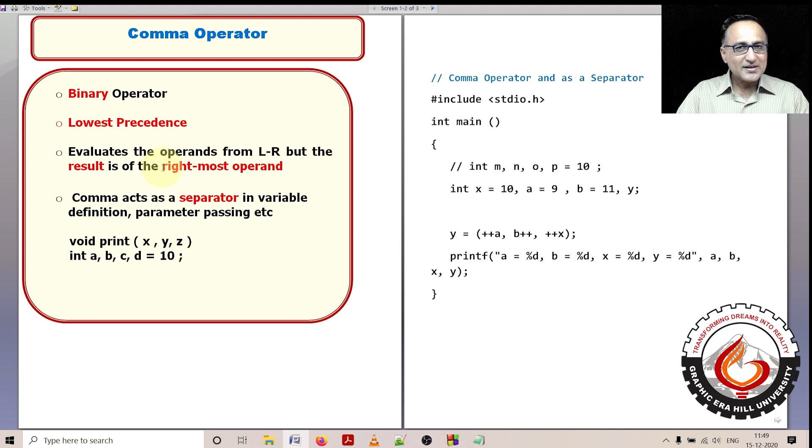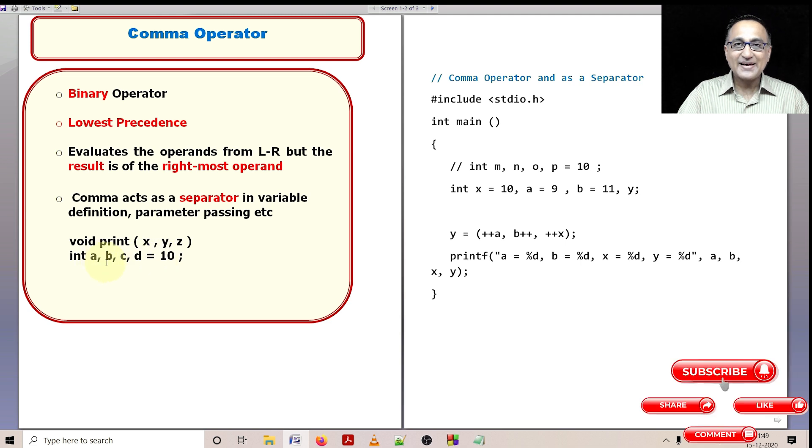Now you need to understand there is a difference between the comma as operator and comma as a separator. For example, if I declare an integer variable a comma b comma c comma d is assigned the value 10, here comma is acting as a separator. Similarly, if I call the function print and I pass the parameters x, y and z, here again comma is acting as a separator. So let me show you the working of comma as an operator now.